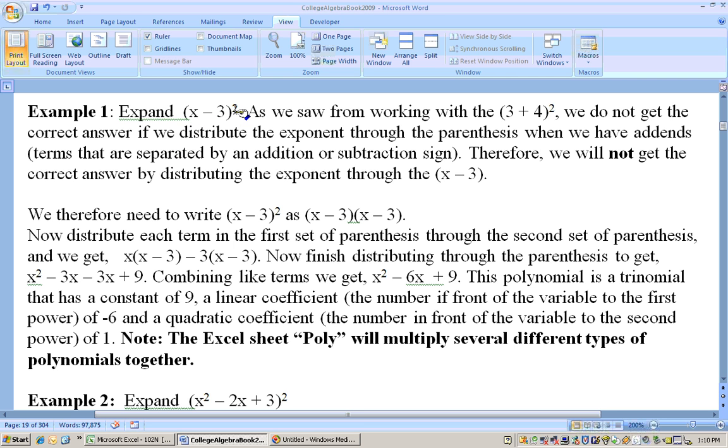Well, x minus 3 squared, we cannot distribute that squared in like we did with just exponents when things in here are multiplied together. This is an addition. These things are added or subtracted. So what we have to do is write this out, x minus 3 squared, as x minus 3 times x minus 3. And you've probably seen this before where we take the x and distribute that through that set of parentheses, taking the x through the x minus 3. Then we take the minus 3 through the x minus 3.